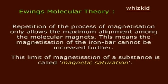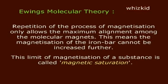Repetition of the process of magnetization only allows the maximum alignment among the molecular magnets. This means the magnetization of the iron bar cannot be increased further. This limit of magnetization of a substance is called magnetic saturation.